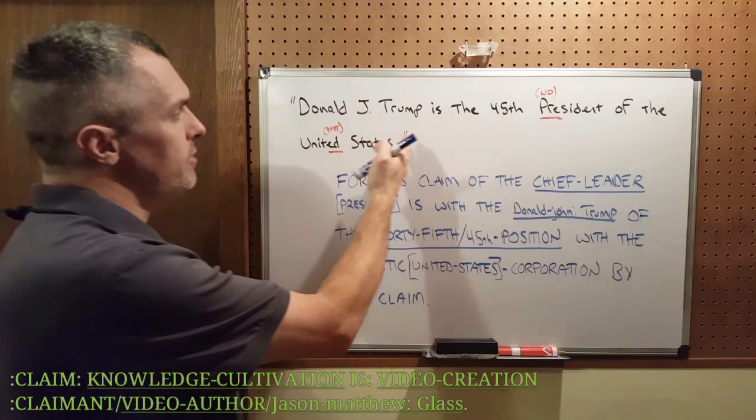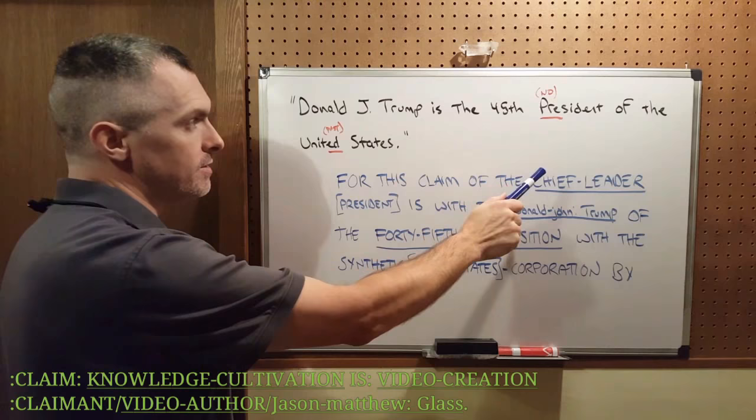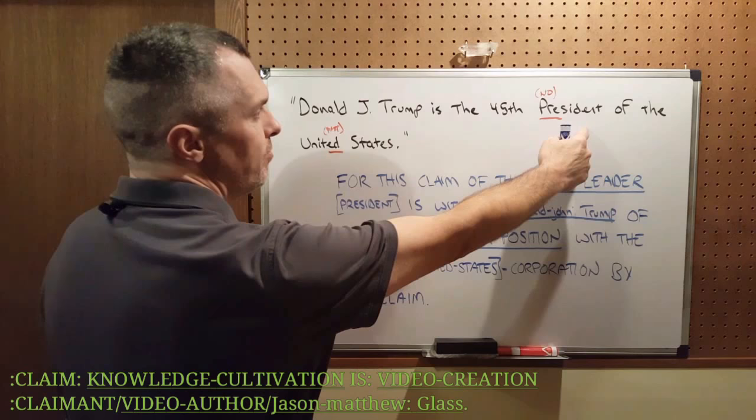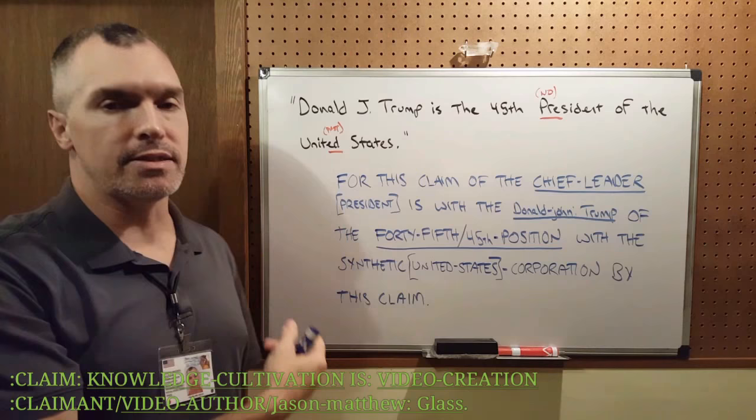Donald J. Trump is the 45th president of the United States. In that syntax video, I syntaxed the sentence. But for our purposes here, we're just going to look at the no-contract things. So we have 'president.' P-R-E means 'no' — that's a no-contract word. E-D is past tense, it negates the now time. So that's a no-contract word.